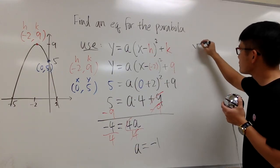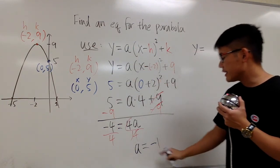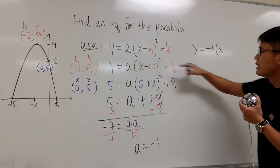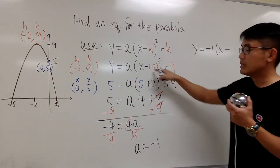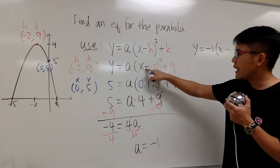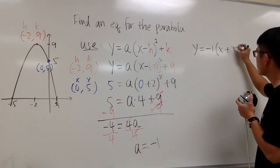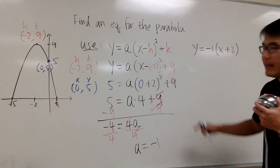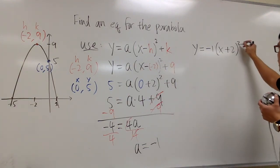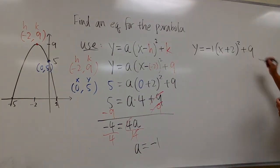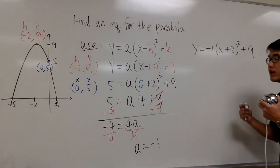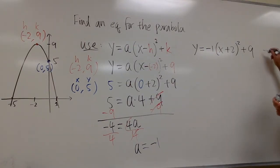So if you want to have the equation in vertex form, this is going to be the answer. We will have y is equal to — a is negative 1, so I'm going to plug in negative 1 for a. And I'll put on the parentheses. x minus, and we know the h, which is minus negative 2, so technically this is plus 2. And a is negative 1. We have the square, and we have the plus 9. This right here is the vertex form of the parabola.